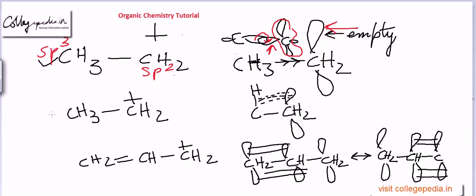Let's move on to hyperconjugation in this intermediate. Suppose we have an intermediate where this carbon has a plus charge and an empty orbital, and adjacent to it we have a C-H bond. Hyperconjugation can operate from this C-H bond — the C-H bond will be almost parallel to the empty orbital, so electronic density will move from this bond directly into the empty orbital. Unlike the inductive effect, electrons are indeed being pushed into the empty orbital, and the extent of electron movement will be higher. So hyperconjugation is a much stronger effect than inductive effect.